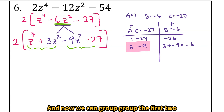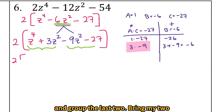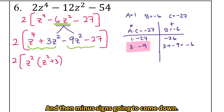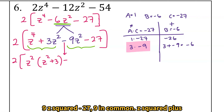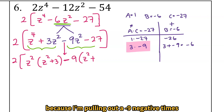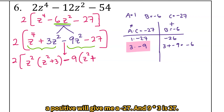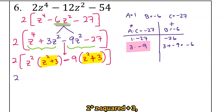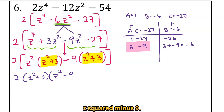Now we group: z to the fourth plus 3z squared have z squared in common. Then minus sign comes down, and from 9z squared minus 27 we factor out 9, giving z squared plus 3 as the common binomial factor. So we get 2 times z squared plus 3, times z squared minus 9.